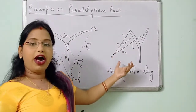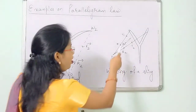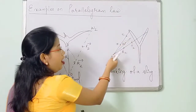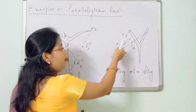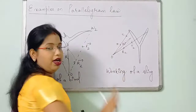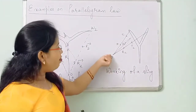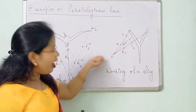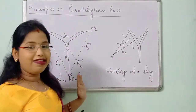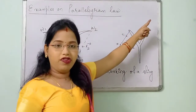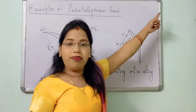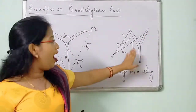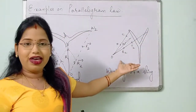So here again we can use the parallelogram law. Being the two adjacent sides of the parallelogram, the diagonal drawn from the same point gives the resultant. When we release the stone, the resultant vector R goes in this direction — so the stone moves in that direction. This is the working of a sling, where we also use the parallelogram law.